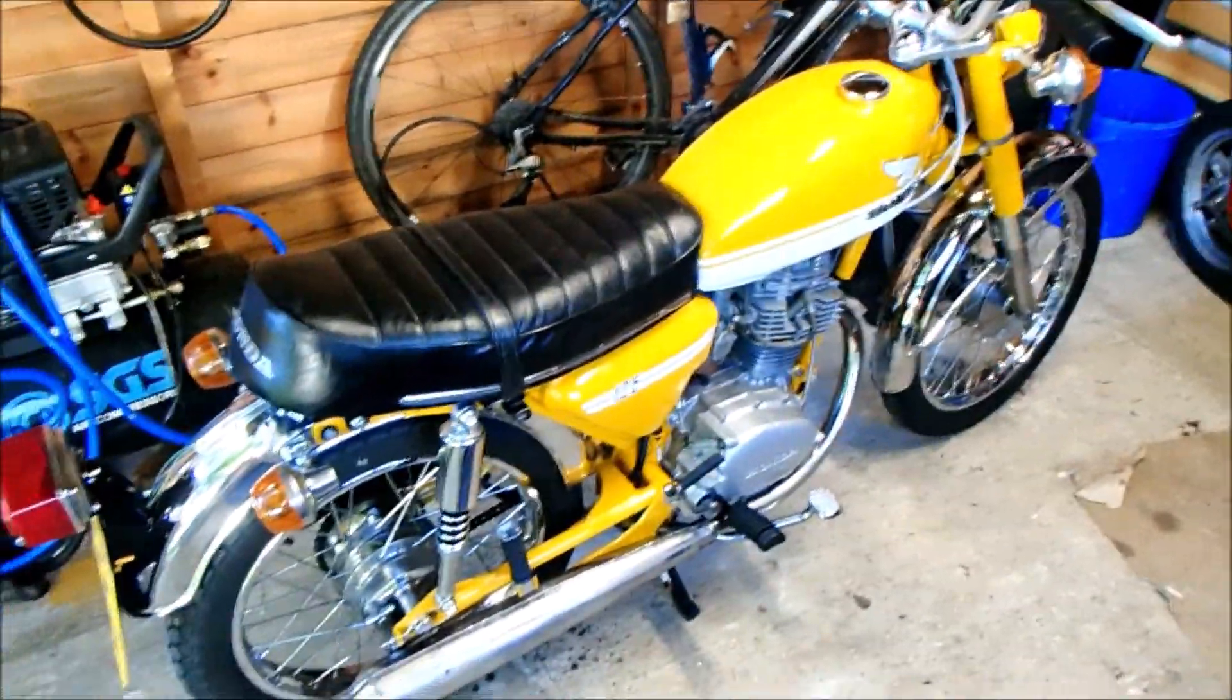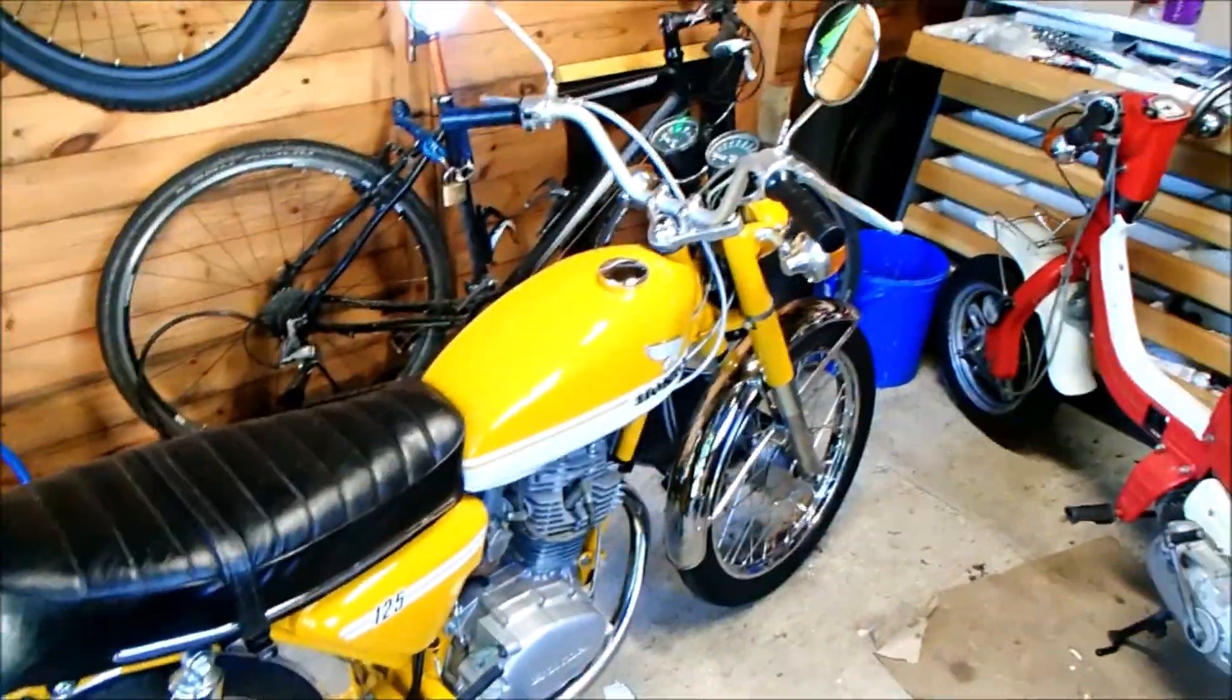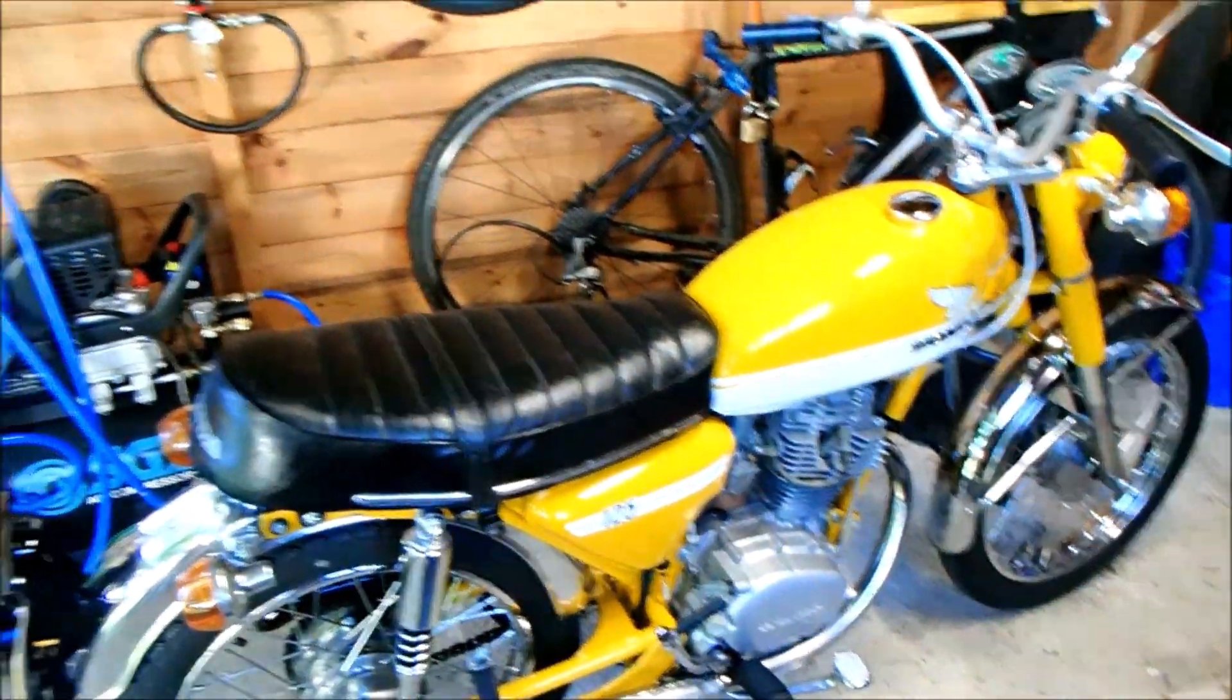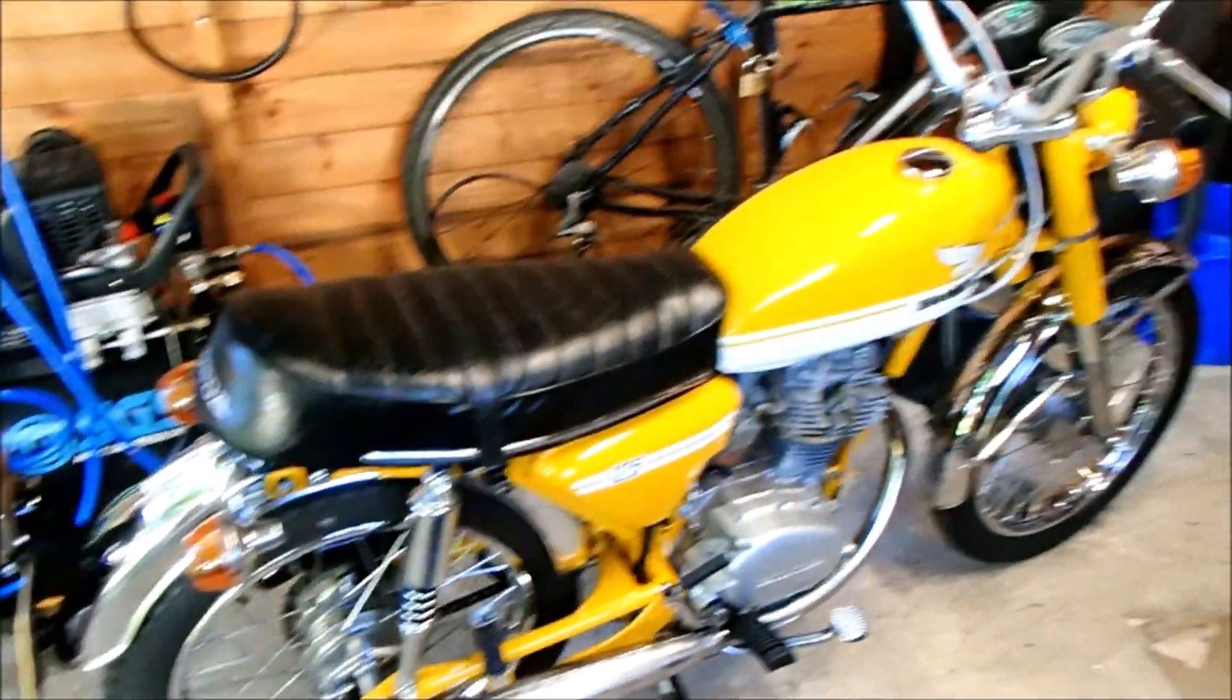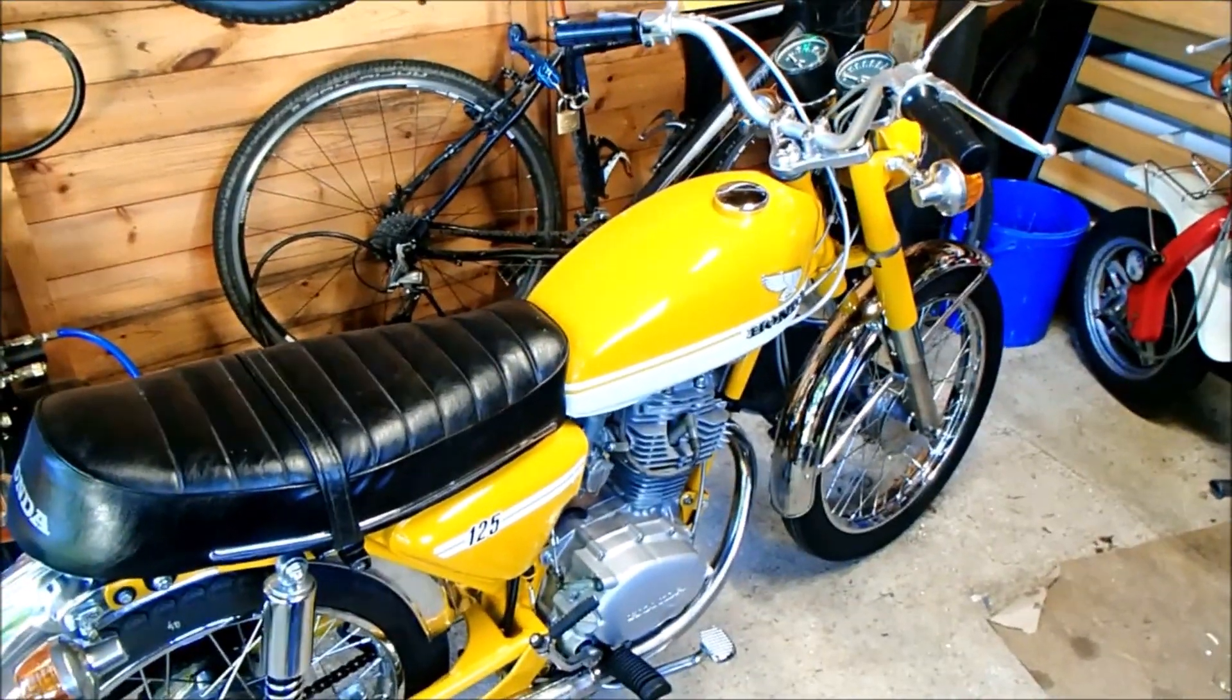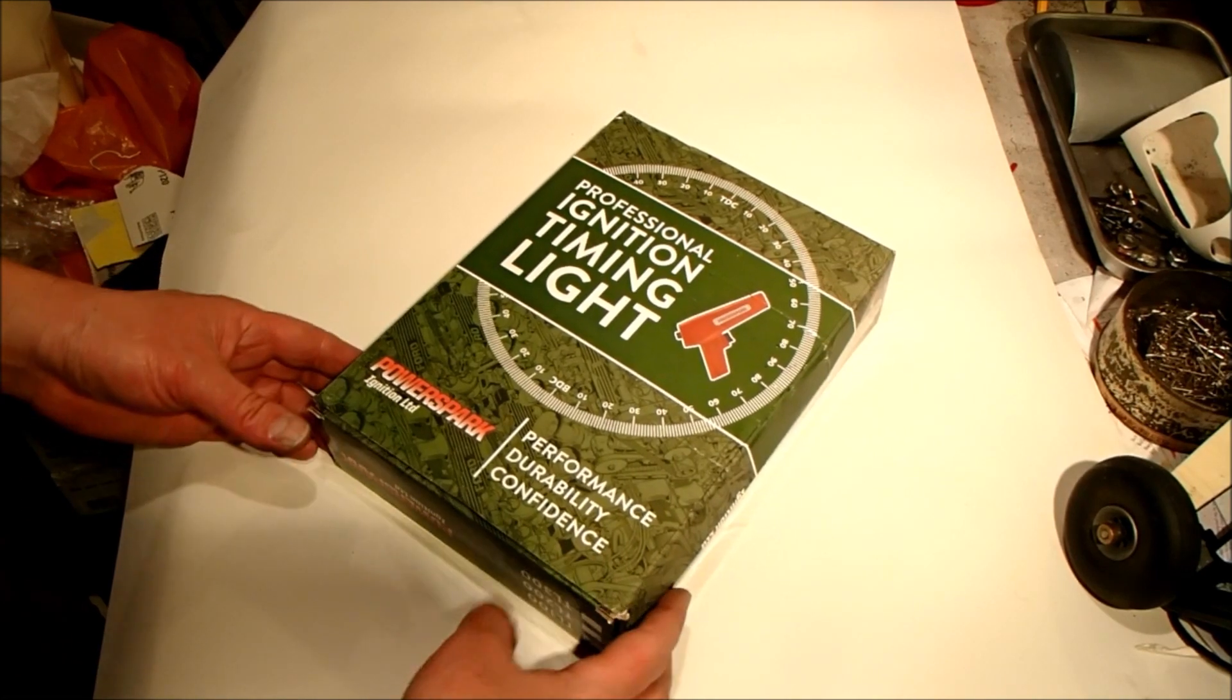Tonight we're going to check the timing on the little CB125 just to make sure that it hasn't moved since we last checked it, and also a good opportunity to review the ignition timing gun. So very quick and dirty review of the eBay 18 pound professional ignition timing light, or just a timing light to everyone else.